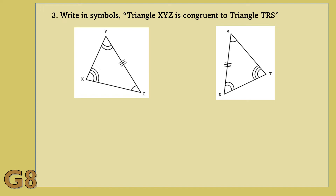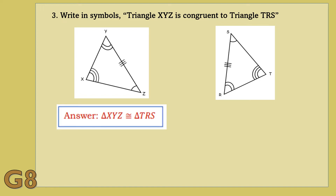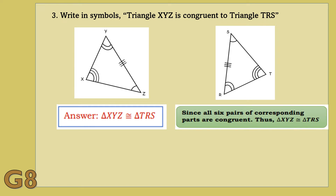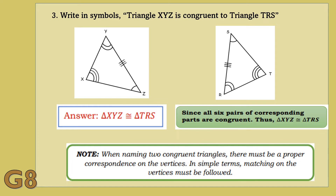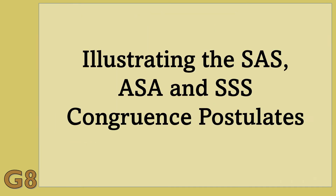Now, let us have example number 3. You are going to write in symbols: triangle XYZ is congruent to triangle TRS. Write your answers on your paper. Now, let us have the answer. Since all 6 pairs of corresponding parts are congruent, thus triangle XYZ is congruent to triangle TRS. Did you get all the correct answers, students? Great! This time, let us illustrate congruence postulates.